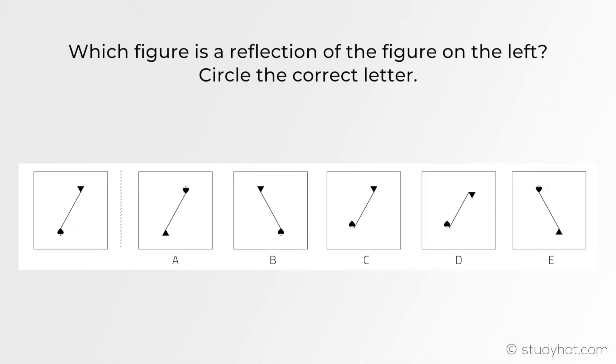One thing to remember is that the size doesn't change therefore we can start eliminating any wrong figures so D and C in fact are smaller than the original question. Therefore we can cross those off and then just by looking at position we know that since it's only reflecting vertically the shapes wouldn't move up or down.